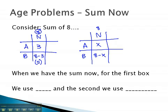We find when we have the sum now, for the first box, we will use x, and the second box, we will always use total minus x. Let's take a look at some examples, where we can see this play out.